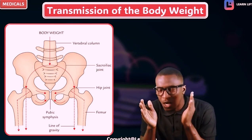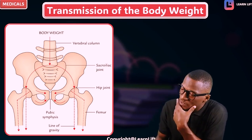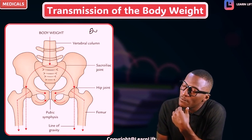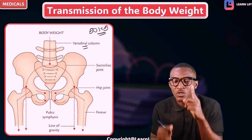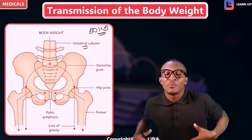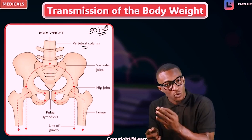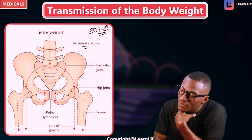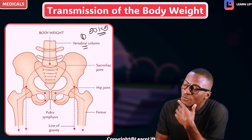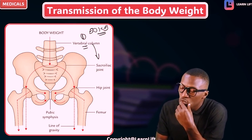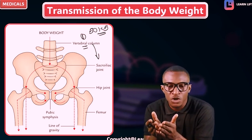First of all, eyes on the diagram. The red arrow is giving us an indication of how the body weight is being transmitted. Let's say this man is a 50 kilogram man. The 50 kg weight moves downward — it starts from the vertebral column. All the weight of the body is borne at the vertebral column, right from the cervical to the thoracic to the lumbar to the sacral and then to the coccyx.